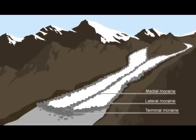There are also moraines: lateral, medial, ground and terminal. When glacial ice melts, rocks that have been previously carried along by the glacier are deposited. Piles of these deposits are called moraines. Lateral moraines are deposited along the sides of the glacier. Terminal moraines are found at the furthest point the glacier reaches.